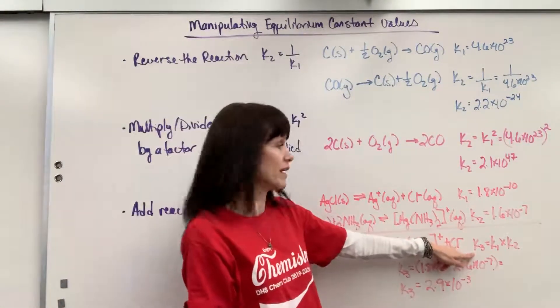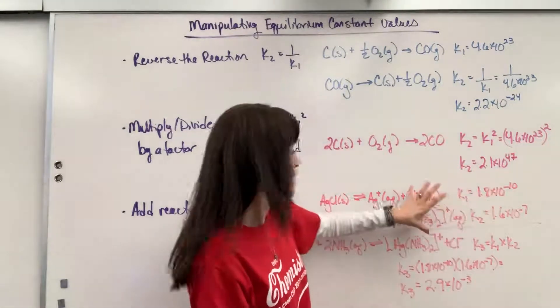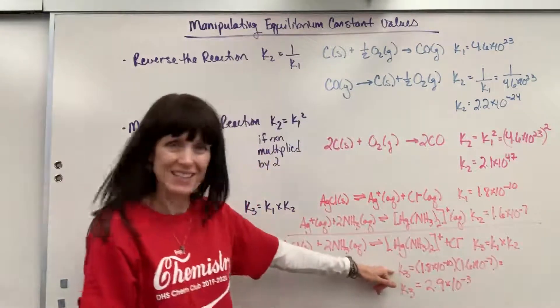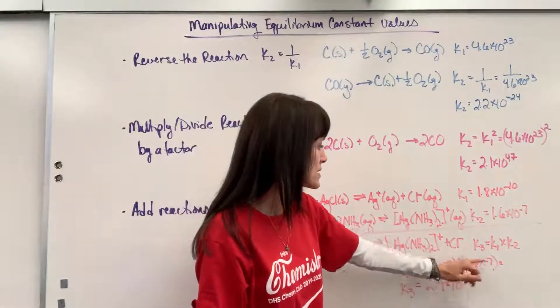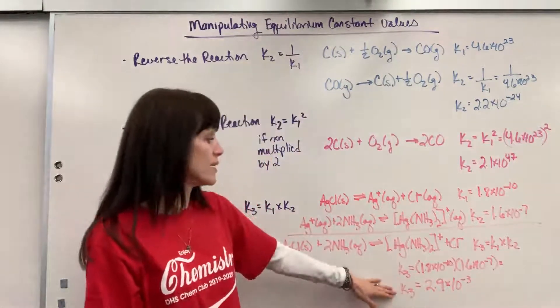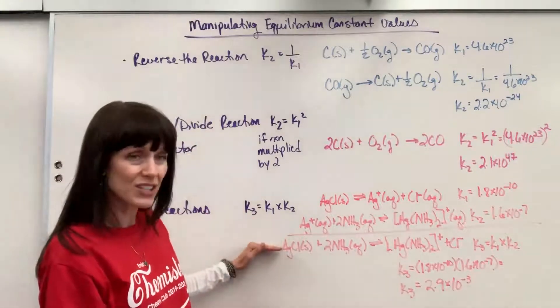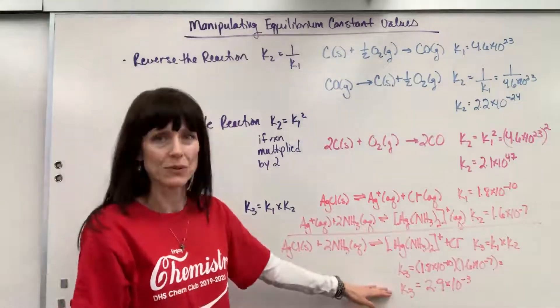So to find the equilibrium expression for that, K3 is what I'm calling it. I take these two equilibrium expressions that we had added the reactions, you multiply them. So it's K1 times K2. I did that down here. K3 will be 1.8 times 10 to the minus 10 times 1.6 times 10 to the minus 7, and you get 2.9 times 10 to the minus 3 for the new reaction, the reaction that we've added together. That will be its equilibrium expression.